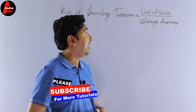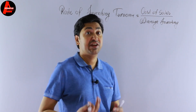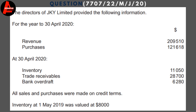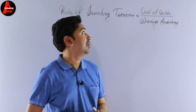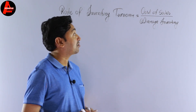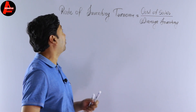Here we need to calculate the cost of sales and average inventory. Looking at the question on screen: the directors of JKY Limited provided the following information for the year ended 30 April 2020. Revenue and purchases are given. At 30 April 2020, inventory is $11,050, trade receivables $28,700, and bank overdraft $6,280. Inventory at 1st May 2019 was valued at $8,000 — this is the opening inventory. In this question, we do not have cost of sales or average inventory directly, so we must calculate both.